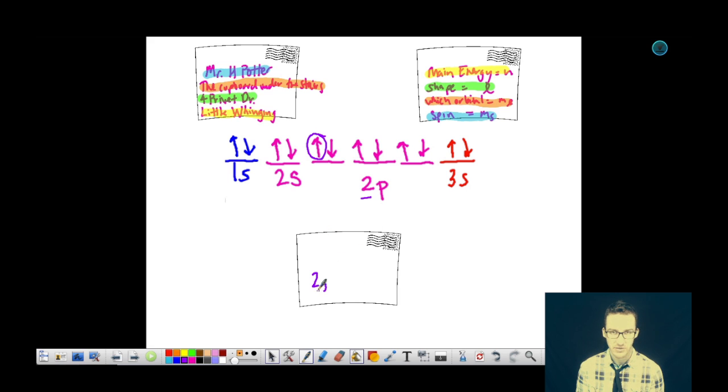Next, I need to know the shape. The shape is a P-shaped orbital, which corresponds to those dumbbell shapes. But we have to assign a number to it.